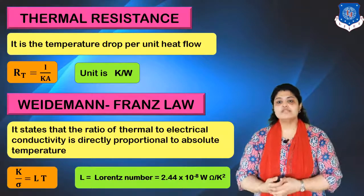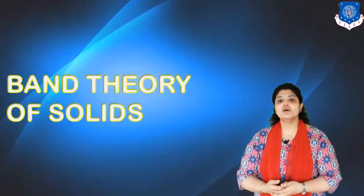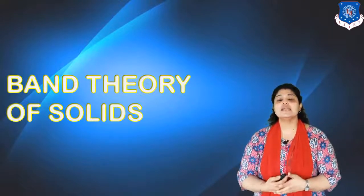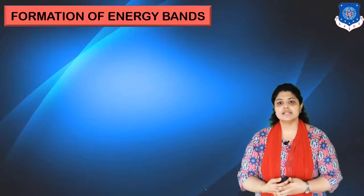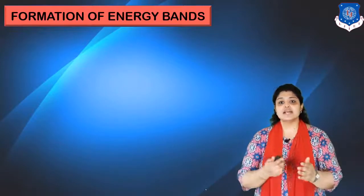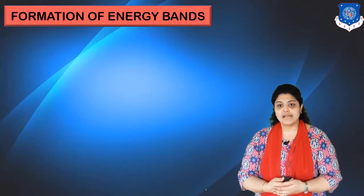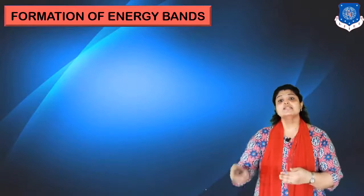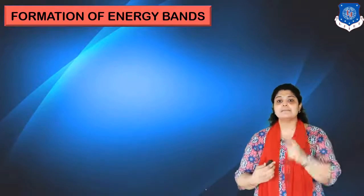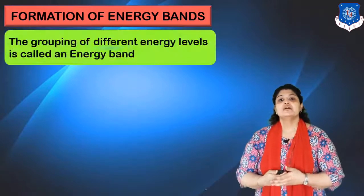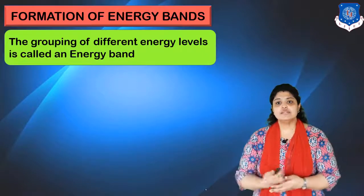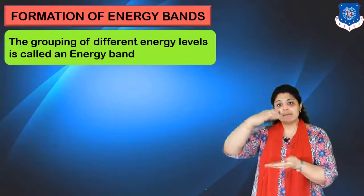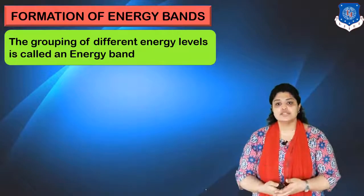Now let us move on to band theory of solids. This is based on the third theory proposed in 1928 by Bloch. The first topic related to band theory is formation of energy bands. Energy bands include the conduction band, the valence band, and the gap between them — the forbidden band. An energy band is defined as the grouping of different energy levels; many energy levels combine to form a cluster known as an energy band.